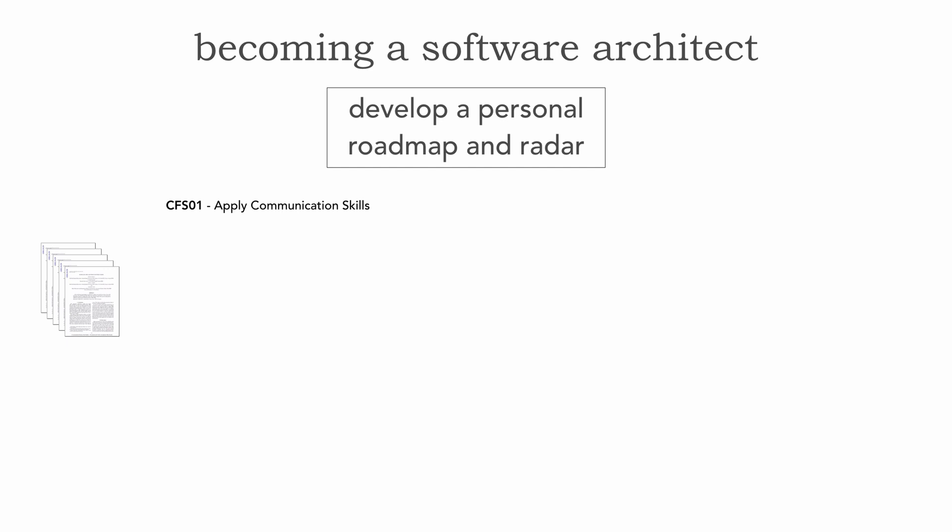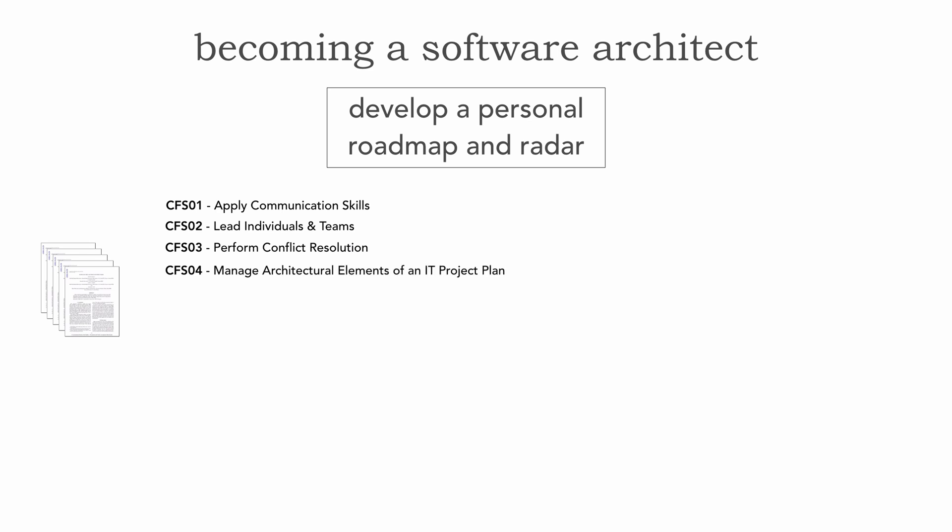The first core foundational skill is applying communication skills, with various levels of proficiency — including leading individuals and leading teams, which is something an architect does need to do. Another is performing conflict resolution, which I talked about in the last lesson regarding negotiation and facilitation. This is an opportunity to say, 'I've never done conflict resolution' and then chart and track that within a radar, which I'll show you shortly.